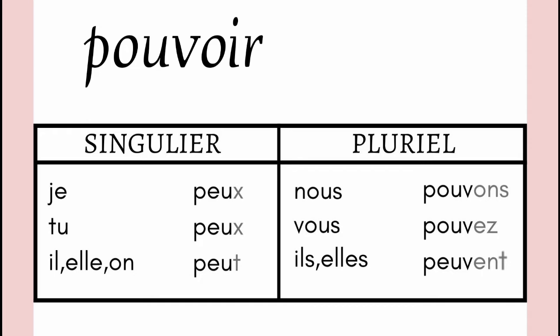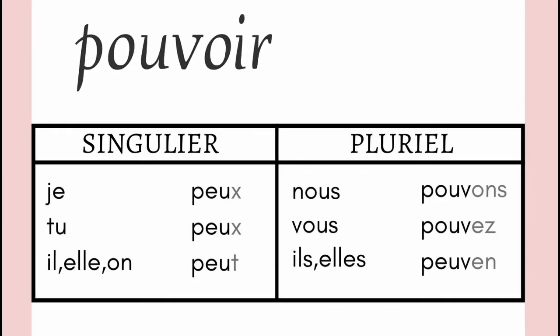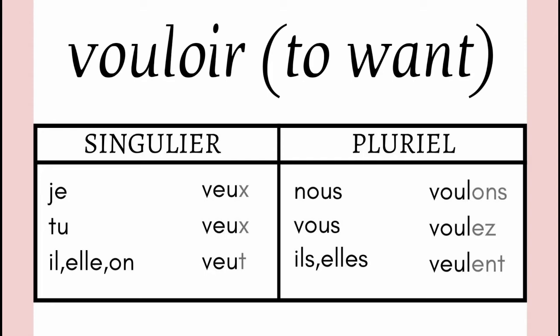There is another verb which is conjugated like POUVOIR, and that verb is VOULOIR. VOULOIR means to want — I want, you want, etc. If you can see the similarity between POUVOIR and VOULOIR: first, the endings are the same — X, X, T, ONS, EZ, ENT. Second, the radicals: with je, tu, il, elle it is V-E-U; with nous and vous it becomes V-O-U-L; and with ils, elles plural it becomes V-E-U-L.